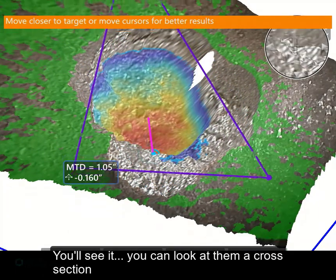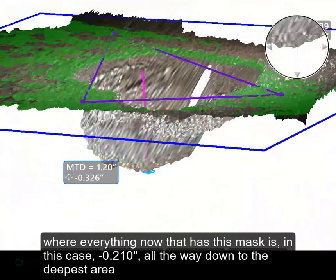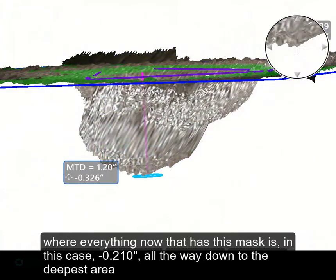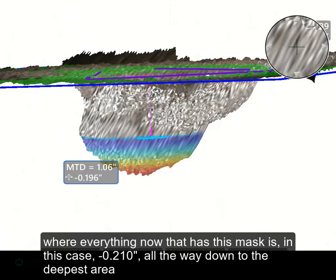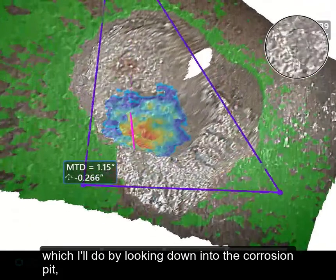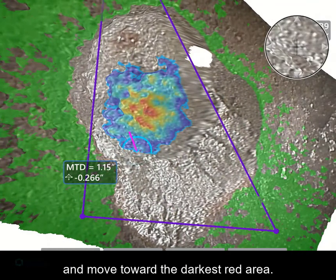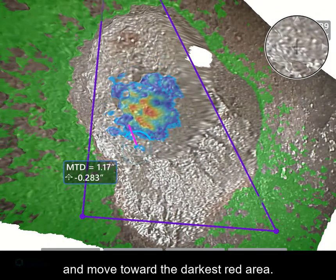You can look at it from a cross-section, where everything now that has this mask is, in this case, 210 thousandths, all the way down to the deepest area, which I'll do by looking down into the corrosion pit and moving towards the darkest red area.